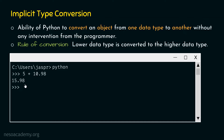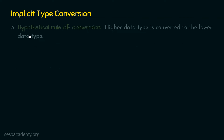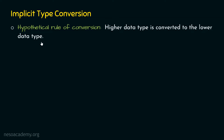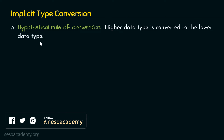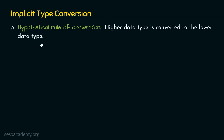Now let's see what happens if Python chose a different, hypothetical rule of conversion — where the higher data type is converted to the lower data type. Let's assume Python follows this hypothetical rule. In this case, if we need to add an integer and a floating point value, Python would convert the floating point value to integer.